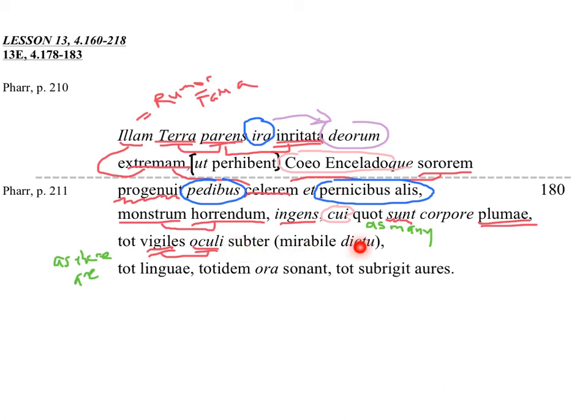Underneath, and then mirabile dictu, marvelous to say. We have the supine here. Marvelous to say. In a sense, it's horrible to say. This is not pleasant. But it's marvelous in the fact that it's bad. Horrible to say.